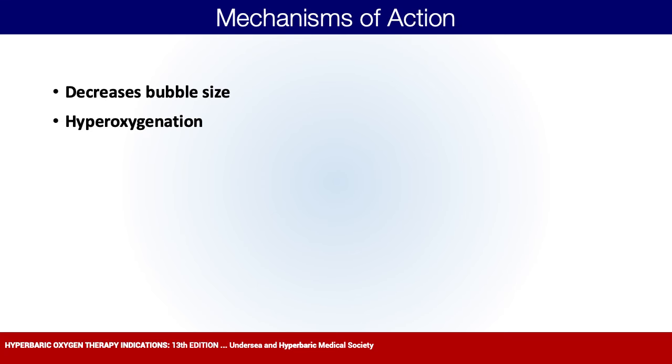The next mechanism is hyperoxygenation — you're getting more oxygen when you go inside the chamber, and that happens every single time. Then there's reduced lipid peroxidation. Lipids are fats, and peroxidation means being oxidized. When fats get oxidized, they become inflamed and break down. Your cell membranes are lipids, the myelin around nerves is lipids, and the membranes around your mitochondria and nucleus are all lipids. Controlling lipid peroxidation is critical to normal, healthy cell function.